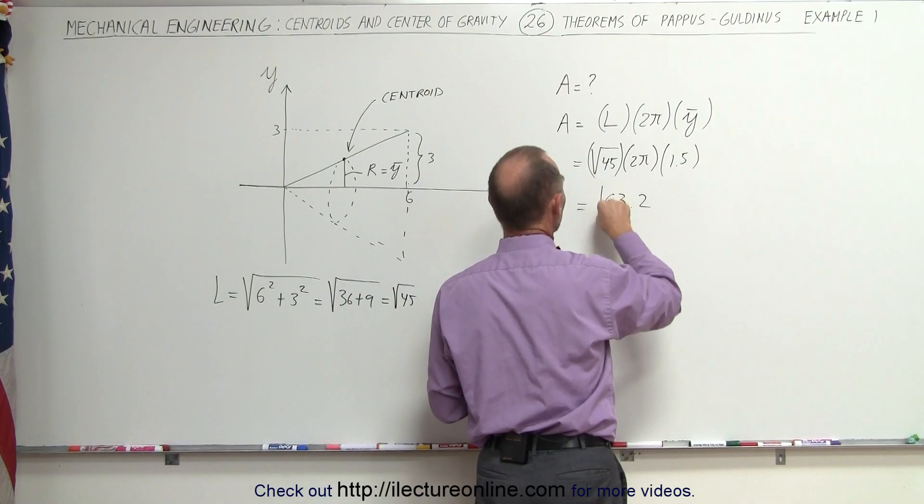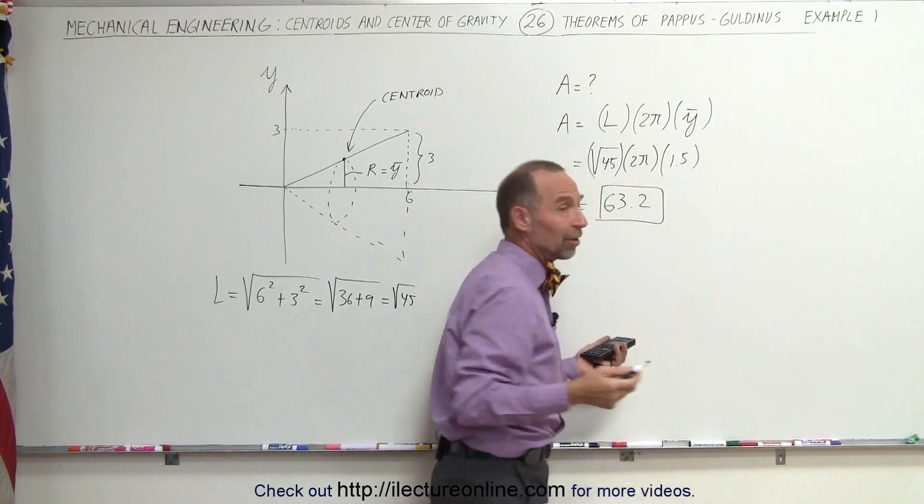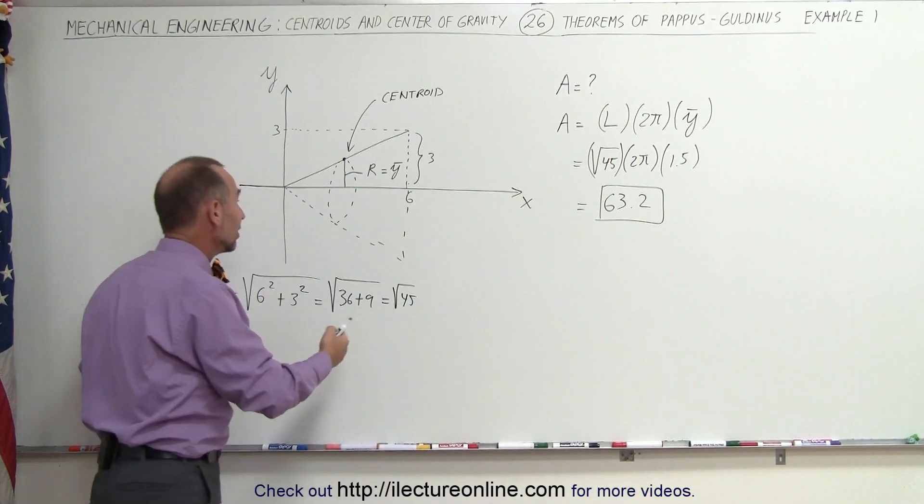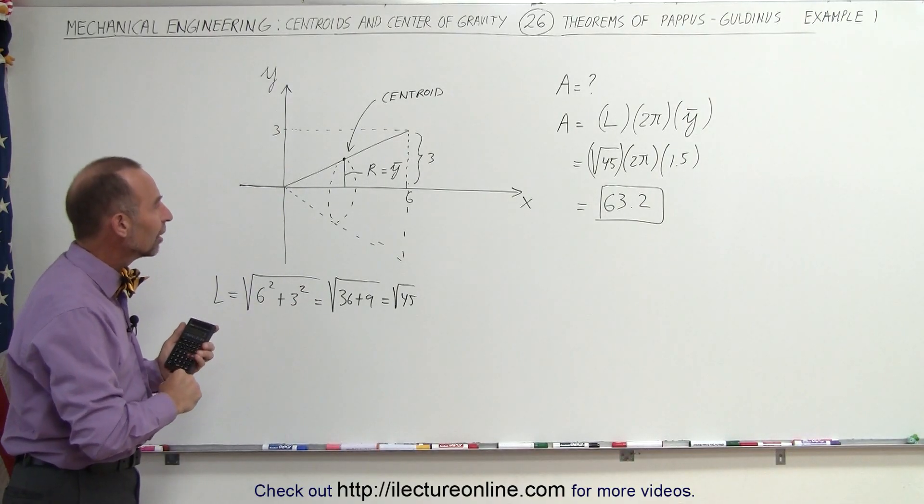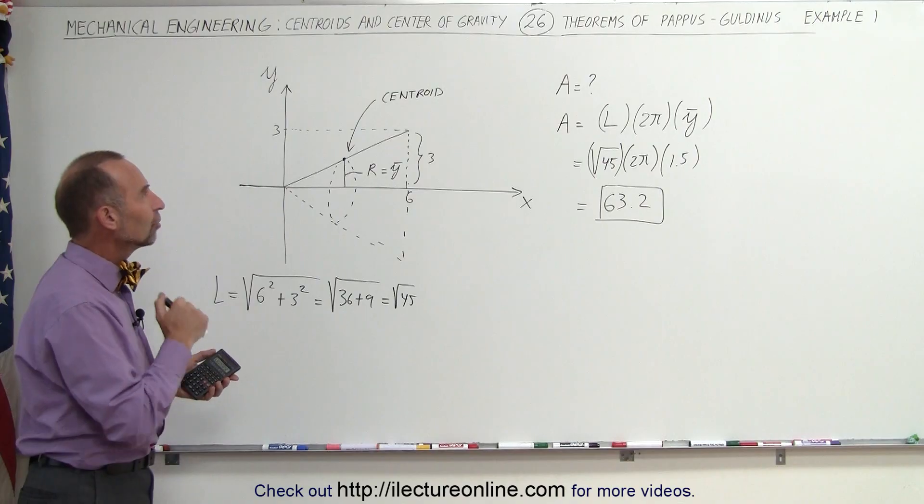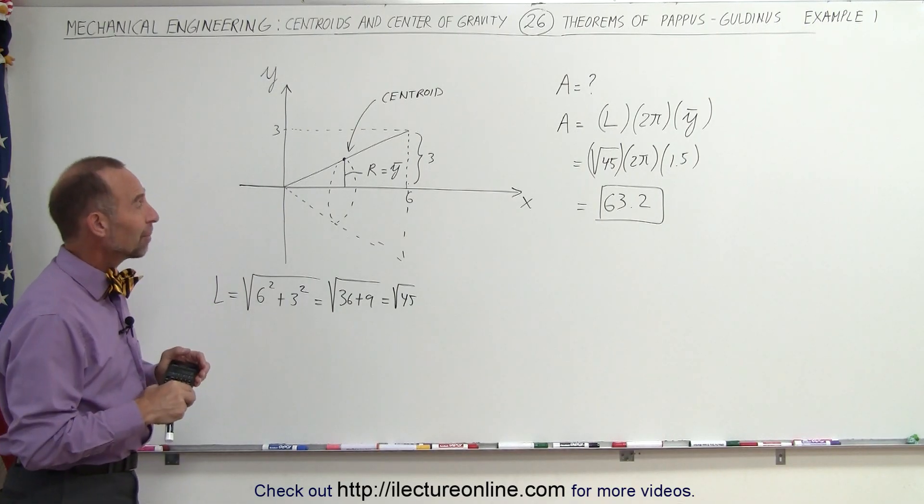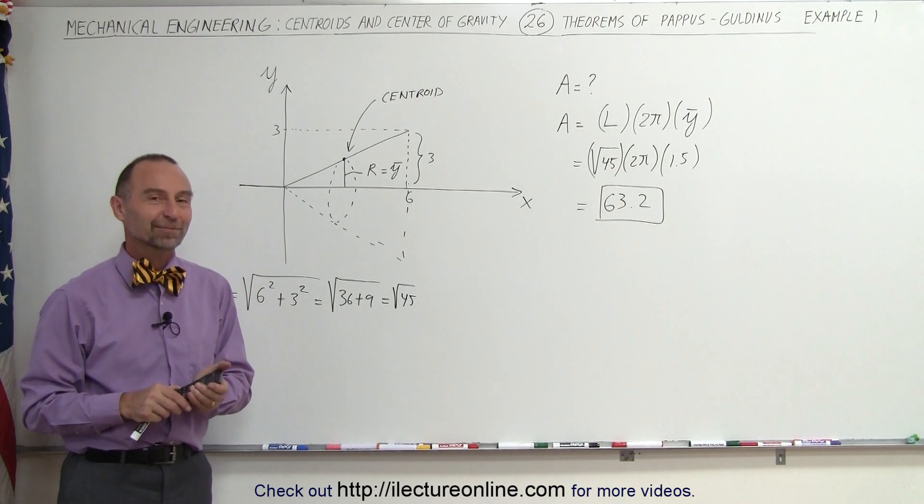63.2 is the area. And then, of course, units-wise depends what we're dealing with here. We're dealing with centimeters, meters, feet, whatever it is. But without the units, that would be the area of that cone by using the very clever theorem of Pappus-Guldinus. And that's how that's done.